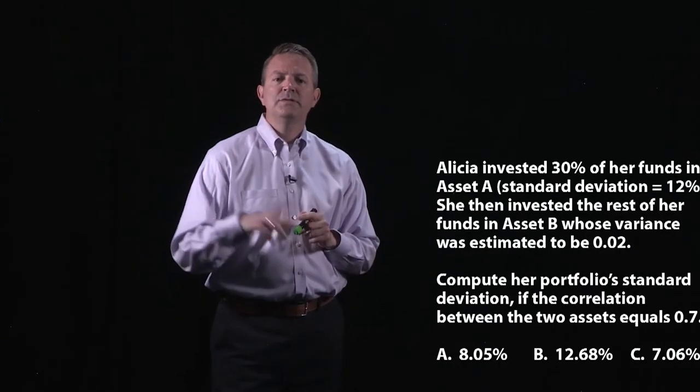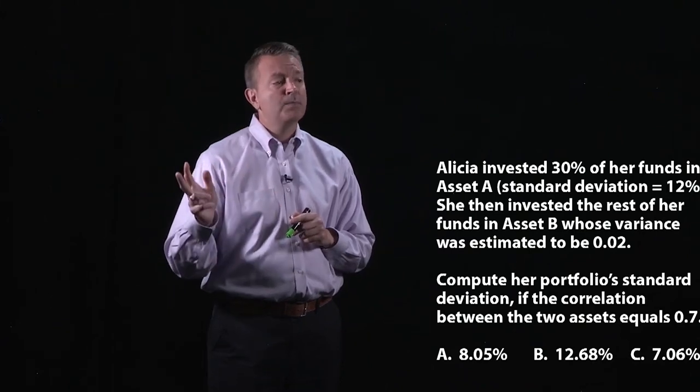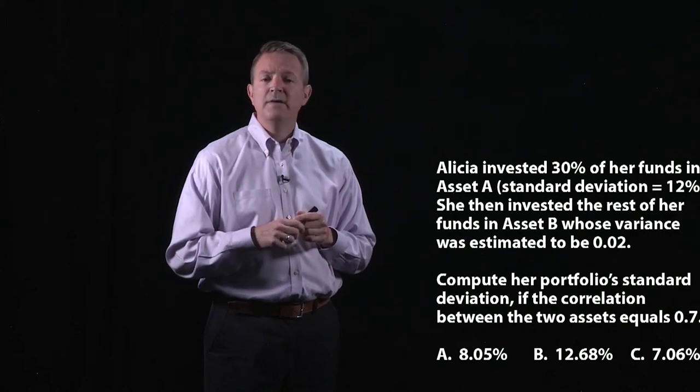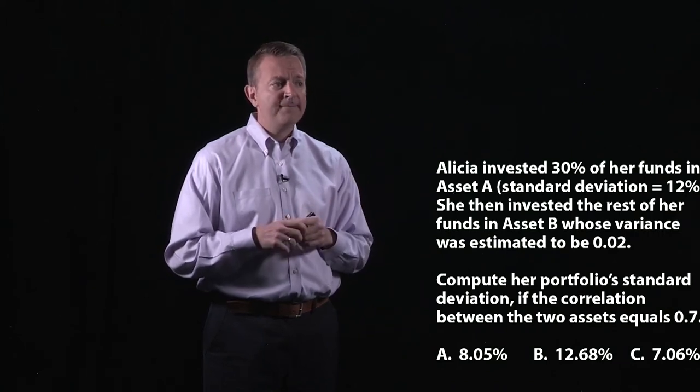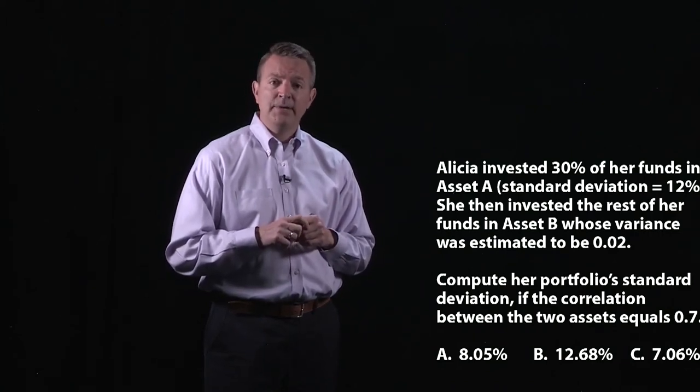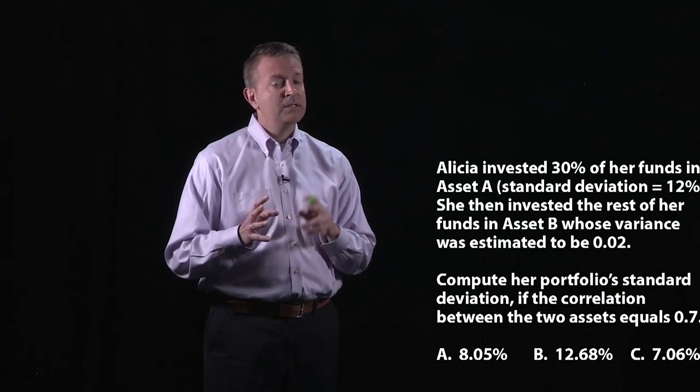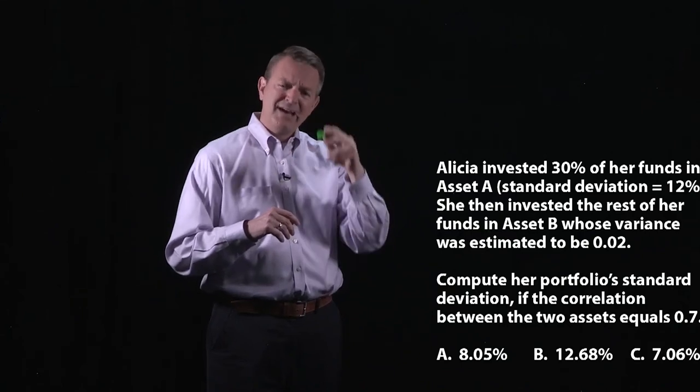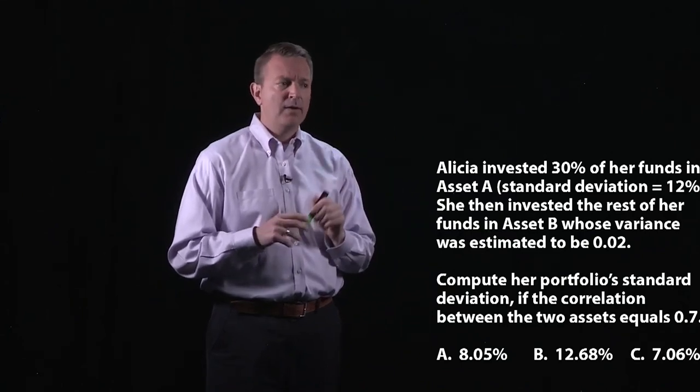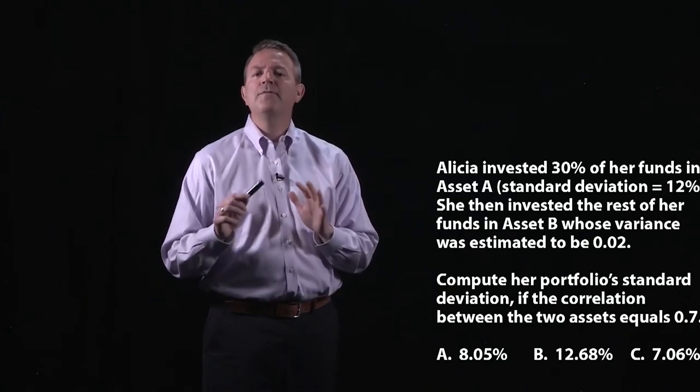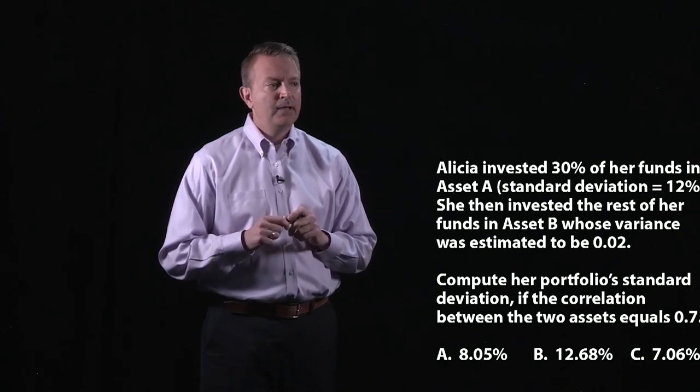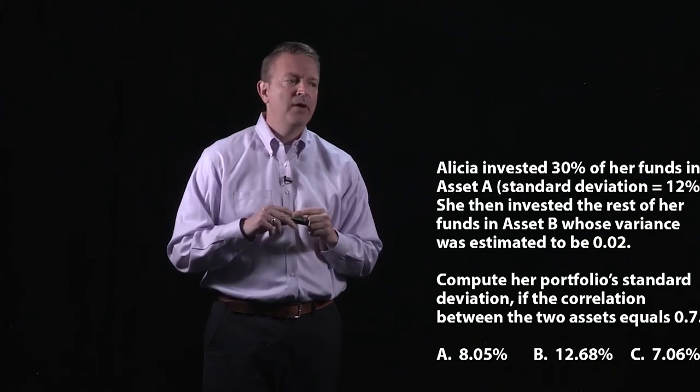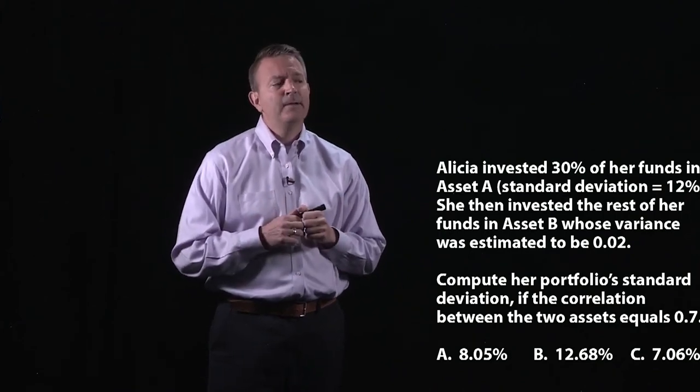We've got Alicia. She has a choice of two different assets. One's at 30%, so you should be thinking that the other asset will be 70%. We've got a standard deviation of 12. We've got a variance on asset B, which hopefully you know is the square of the standard deviation for that asset because it's the amount that varies around the mean squared. We're going to compute her portfolio standard deviation. They also give us the correlation. How do these two assets interact with one another? They tell us that's 0.7.